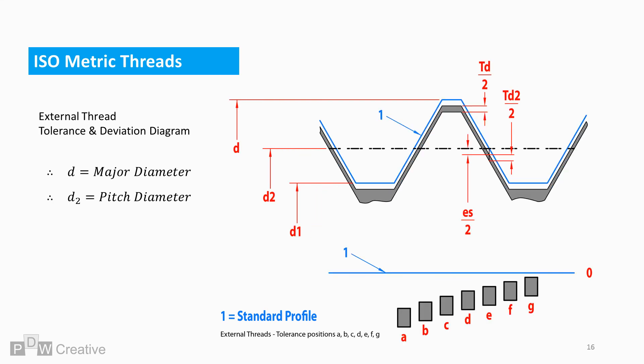The diagram for external thread reverses the deviation and tolerance direction. Position G offers the smallest deviation. Deviation increases at each position up until position A. ES marks the deviation. Tolerances are then applied to the major and pitch diameters.